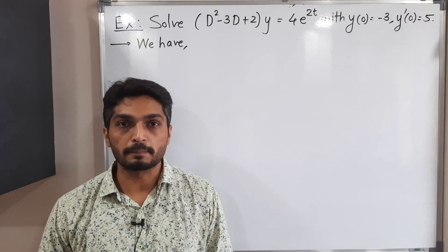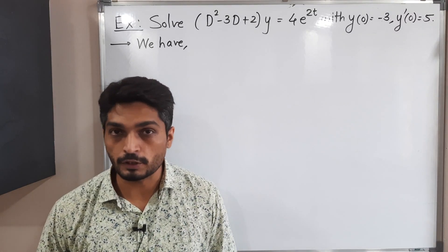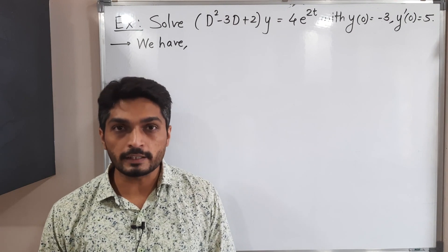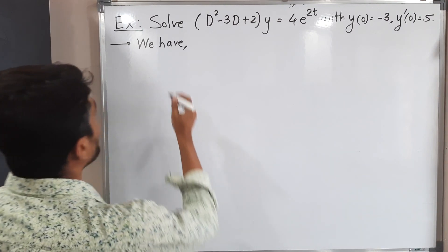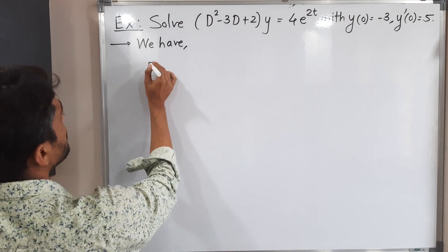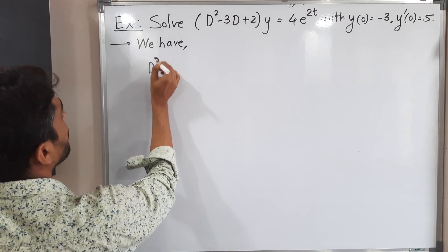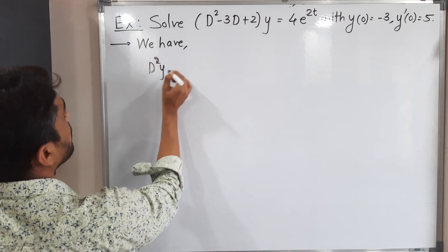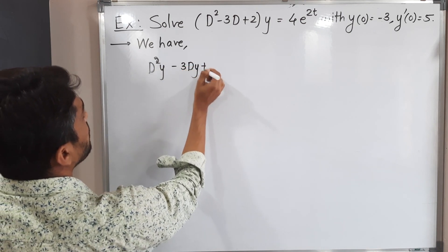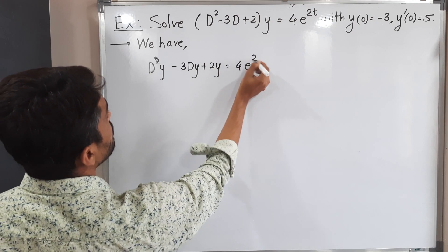Let us discuss this example. We have to solve this differential equation using Laplace transform. The equation is: d²y - 3dy + 2y = 4e^(2t).